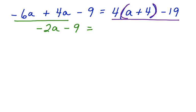We have to use the distributive property to get rid of those parentheses. 4 times a is 4a plus 4 times 4, which is 16 minus 19.